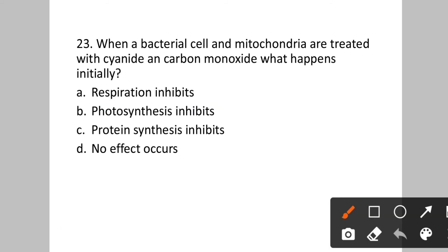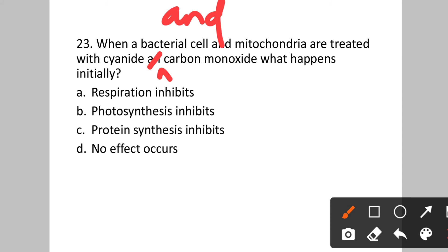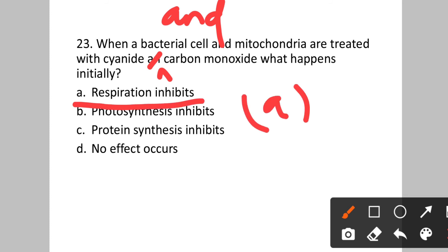Question number twenty-three: When a bacterial cell and mitochondria are treated with cyanide and carbon monoxide, what happens initially? Option A: respiration inhibits. B: photosynthesis inhibits. C: protein synthesis inhibits. D: no effect occurs. When treated with cyanide and carbon monoxide, the process of respiration is inhibited. Option A will be the correct answer.